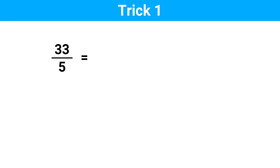Suppose you have to divide a number by 5 — let's say 33 divided by 5. If you look at it, you can see it's a little bit complicated. To get the answer without using a calculator, you have to go through the long division method. But there is an easy way to do this. We can convert this complicated problem into a simple one. This is how I do it.